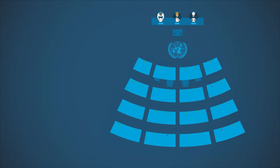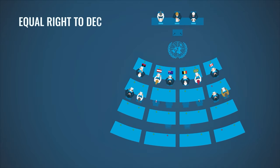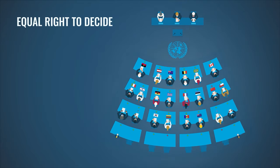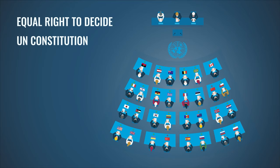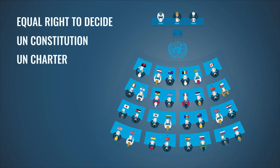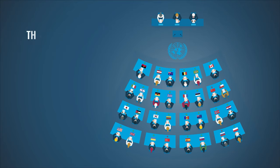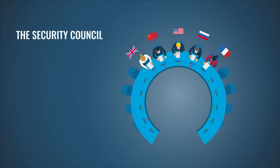In the UN General Assembly, all countries — small and large — have one vote and the same say. All member states are committed to follow the Constitution of the United Nations, the UN Charter, where peace and human rights are central topics.